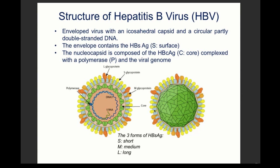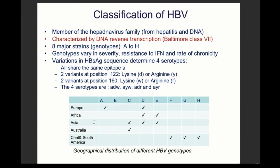In this virus you have the surface antigen, the core protein making up the icosahedral capsid, and a polymerase protein that attaches to the viral genome. One peculiar thing about this virus is that it is class 7 in the Baltimore classification — it is a retrovirus family. It has a partially double-stranded DNA and is part of the Hepadnaviridae family.